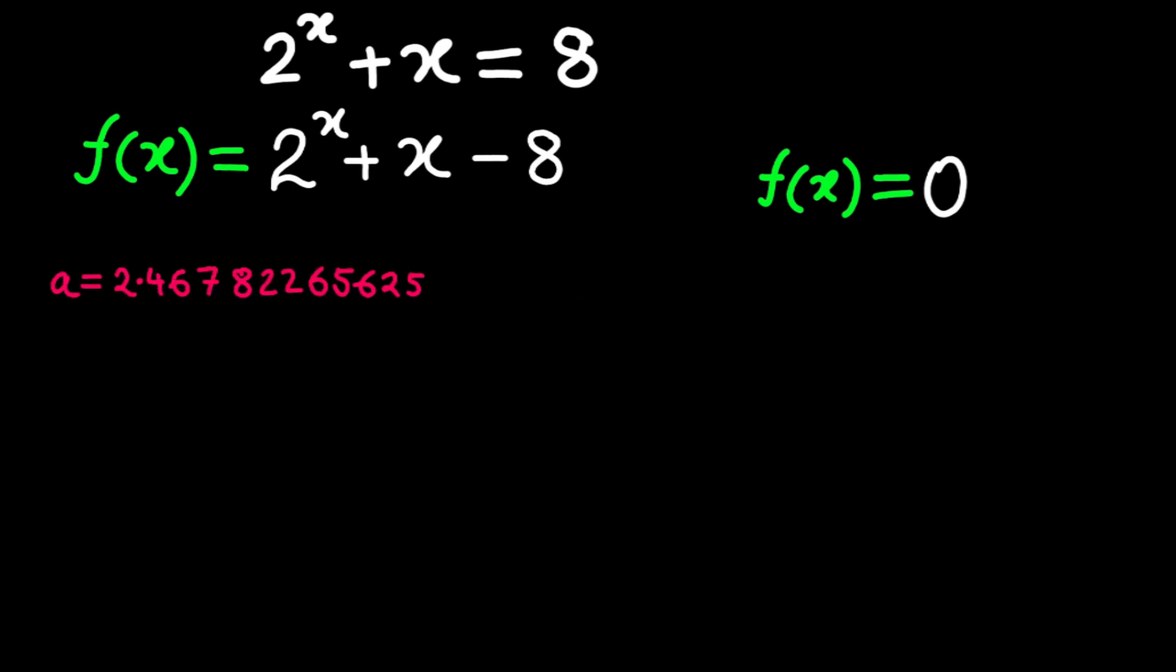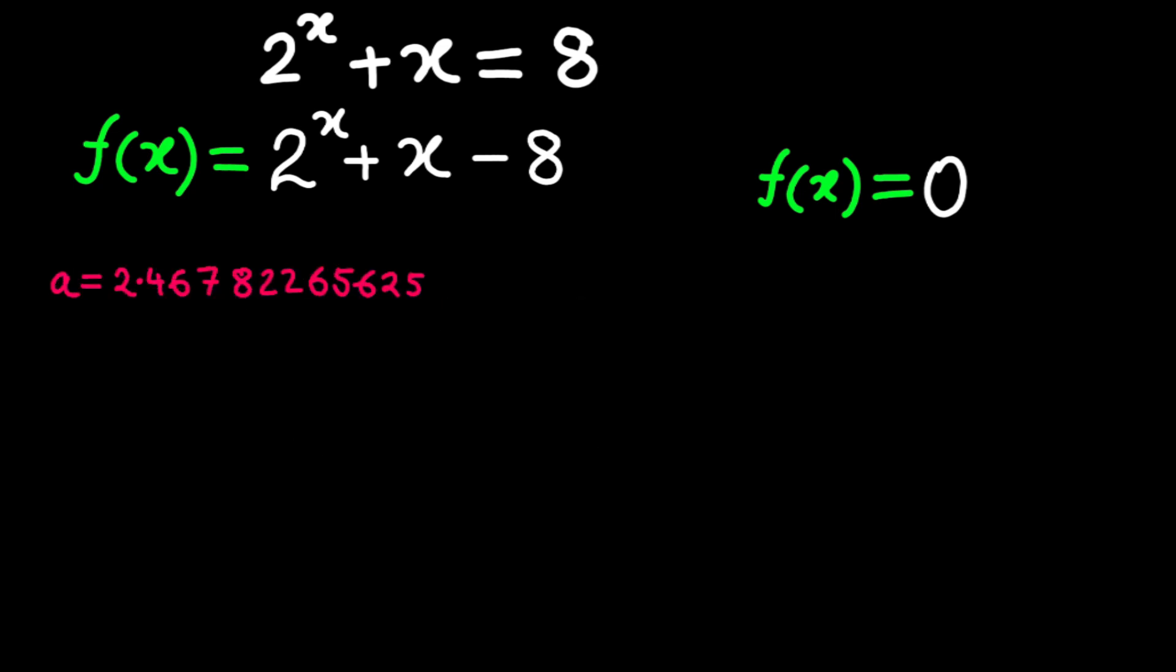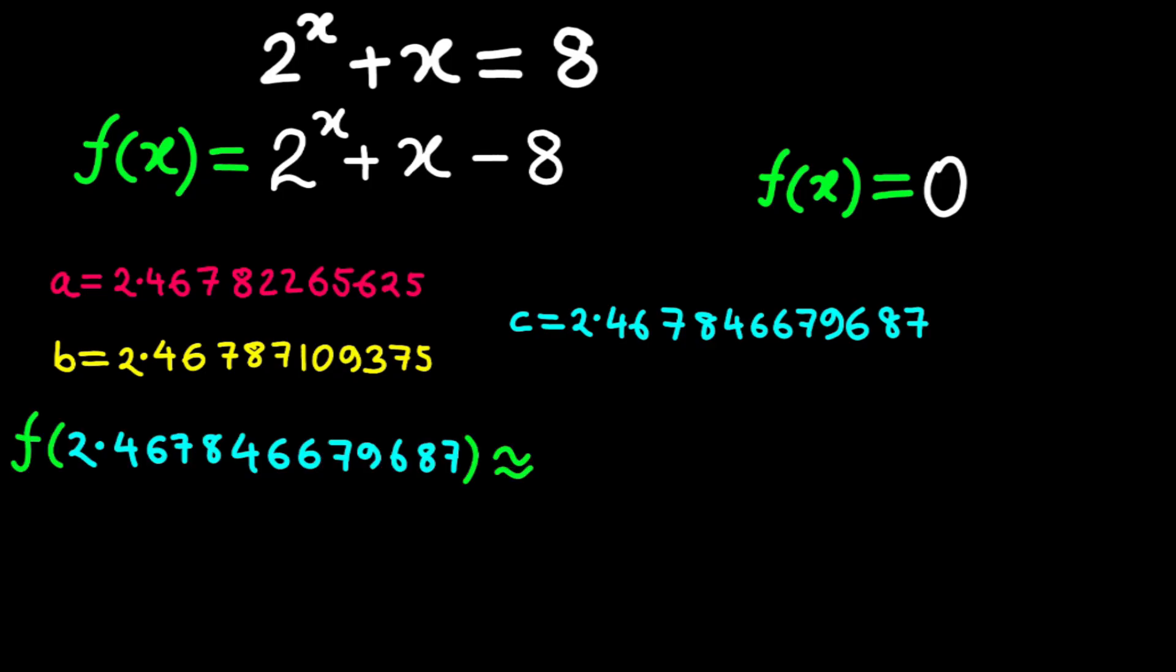2.46782265625 to 2.46787109375. With midpoint, 2.467846679687. Where f of 2.4678466796877 is approximately 0.000021240702. Super close to zero.